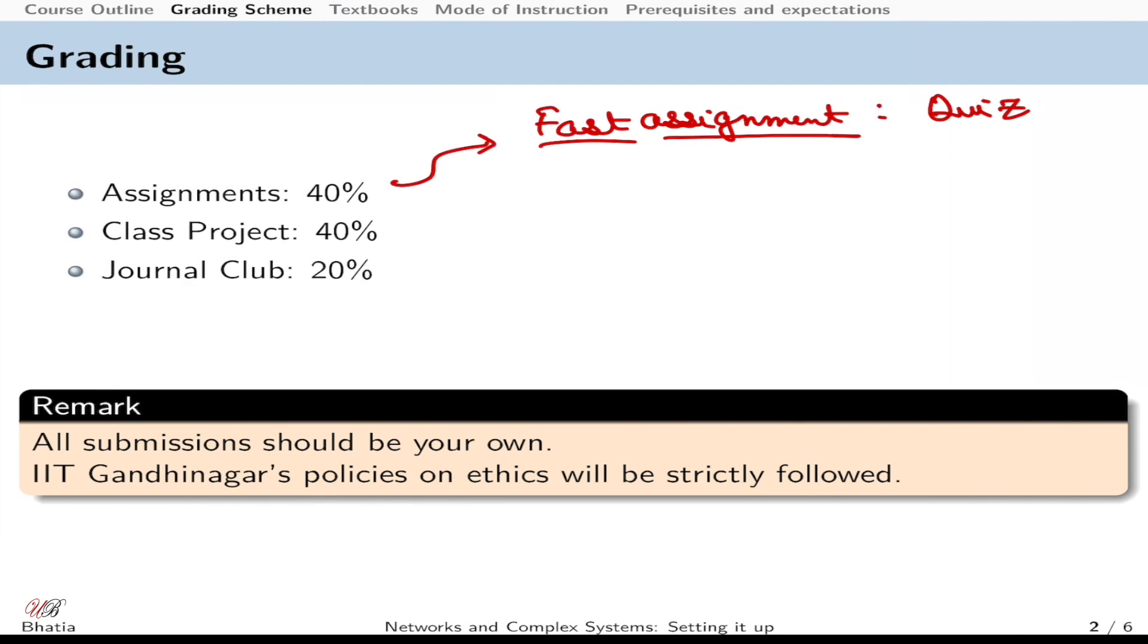There would be a major component of class project. These would be individual projects, and in special cases I can consider a group of two, but the objective is to introduce you to a real definition of an applied network science project. You would be dealing with a real world network with at least 100 nodes, because we want to solve a network that we cannot solve on pen and paper, and you would be forced to write codes. You have to choose a real world system and define a real world question that if answered would add value.